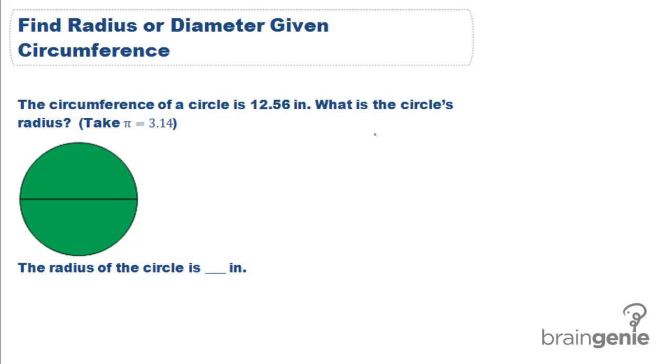It also asks us to use pi as 3.14. As a reminder, circumference is equal to pi times D, or pi times 2 times R.